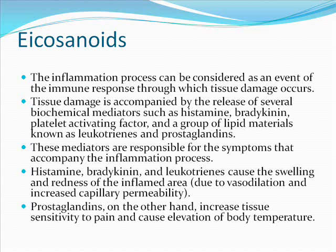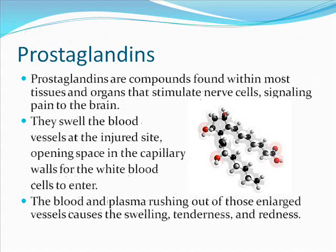Histamine, bradykinin, and leukotrienes cause the swelling and redness of the inflamed area due to vasodilation and increased capillary permeability. Prostaglandins, on the other hand, increase tissue sensitivity to pain and cause elevation of body temperature. Prostaglandins are compounds found within most tissues and organs that stimulate nerve cells signaling pain to the brain. They swell the blood vessels at the injured site, opening space in the capillary walls for white blood cells to enter.